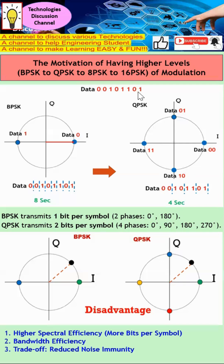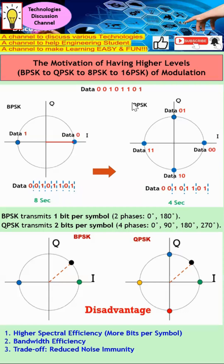With the same set of data, you can see that I can now represent two bits at a time. When the message to represent is 00, the dot appears here to indicate 00. When the message is 10, it appears at the corresponding dot on the constellation diagram. Every time a dot appears it takes one second, so with QPSK you can see that the time to receive the same set of bits reduces from eight seconds to four seconds.